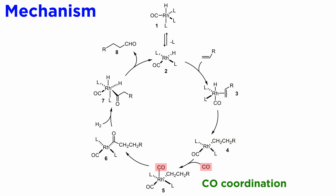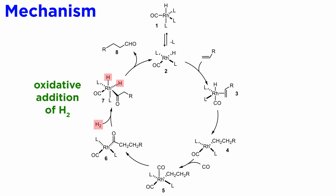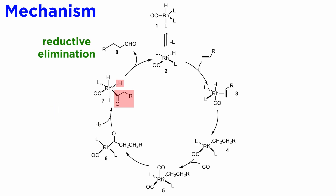This will undergo CO coordination to yield 5. This is followed by insertion of CO into the rhodium-carbon bond to give formation of acyl rhodium complex 6. Then oxidative addition of hydrogen gas yields 7. Finally, this undergoes reductive elimination to yield the product 8, and also regenerate catalyst 2, which enters a new cycle.